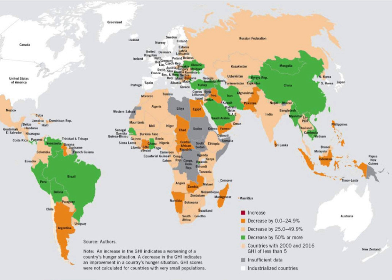Besides presenting GHI scores, each year the GHI report includes an essay addressing one particular aspect of hunger. The 2018 report considers the issue of forced migration and hunger. In previous years, topics included: in 2010, early childhood undernutrition among children younger than the age of 2.